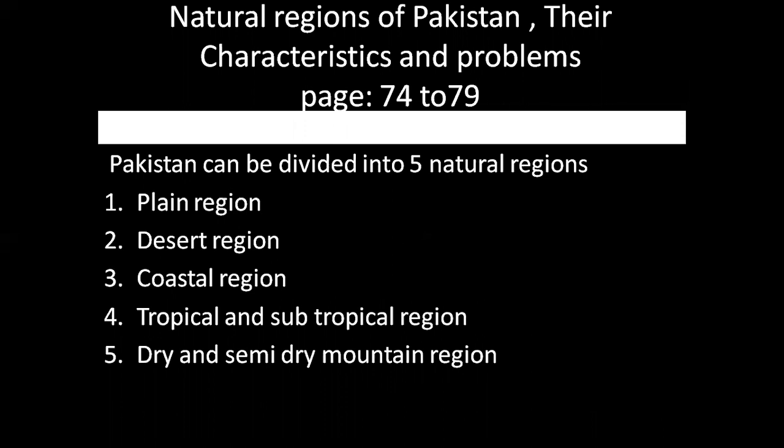Now let's go to page 74: Natural Regions of Pakistan — their characteristics and problems. This heading runs from page number 74 to 79. Pakistan can be divided into 5 natural regions: plain regions, desert regions, coastal regions, tropical regions, and dry and semi-arid mountain regions. We will discuss each in detail.